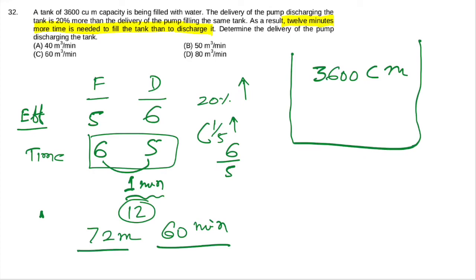Filling time is 72 minutes. So total volume is 3600 cubic meter divided by 60 minutes. From here the value is 60 cubic meter per minute.